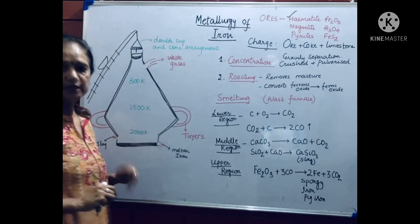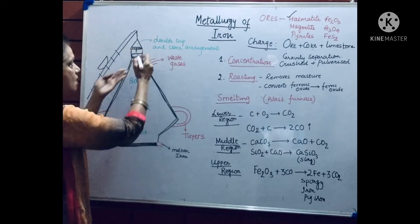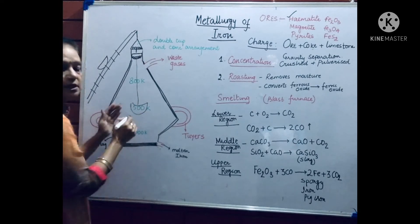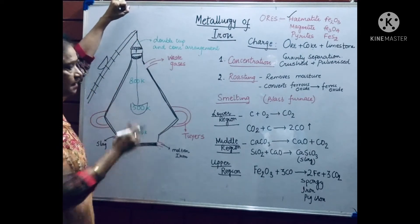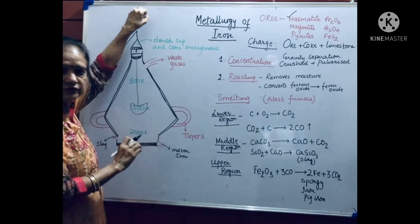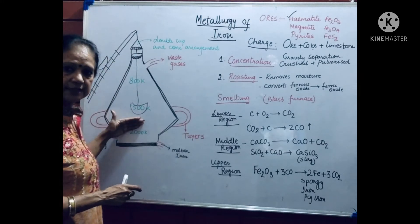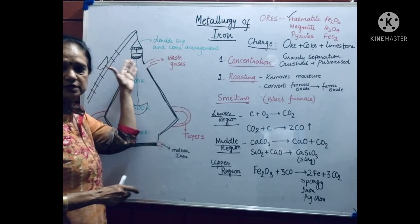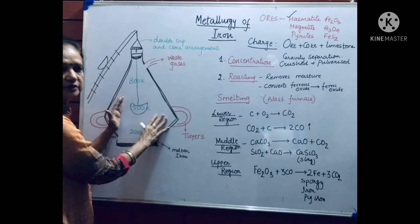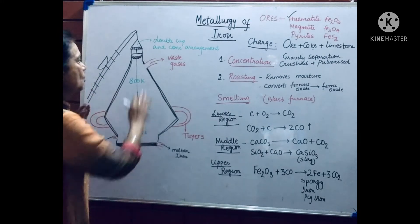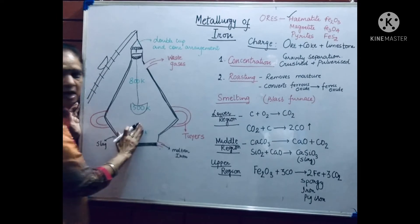The cup and cone arrangement is a pulley system. When ore is put in, it tilts into the cup; the cup comes down into the furnace while the cone closes the door. When the pulley is pulled up, the cup rises and closes the door again. So the cup and cone arrangement throws the charge inside the furnace and keeps the door always closed, so hot gases do not escape and the temperature remains constant. Now reactions start from the lowermost part of the furnace.